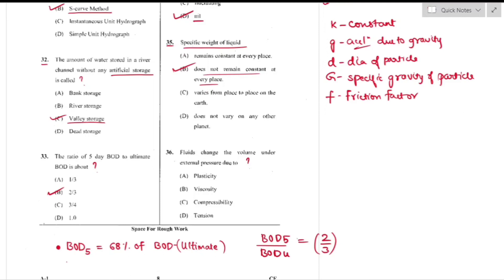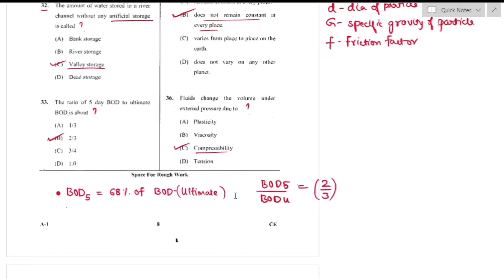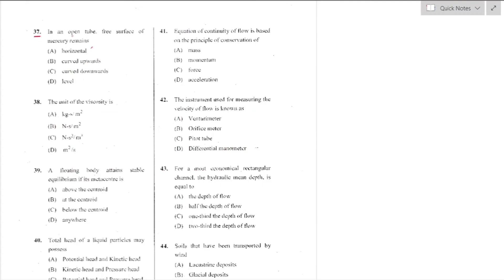Question number 36: Fluid changes volume under external pressure due to compressibility of the fluid. Liquids are generally incompressible while gases are highly compressible — option C is the right answer.